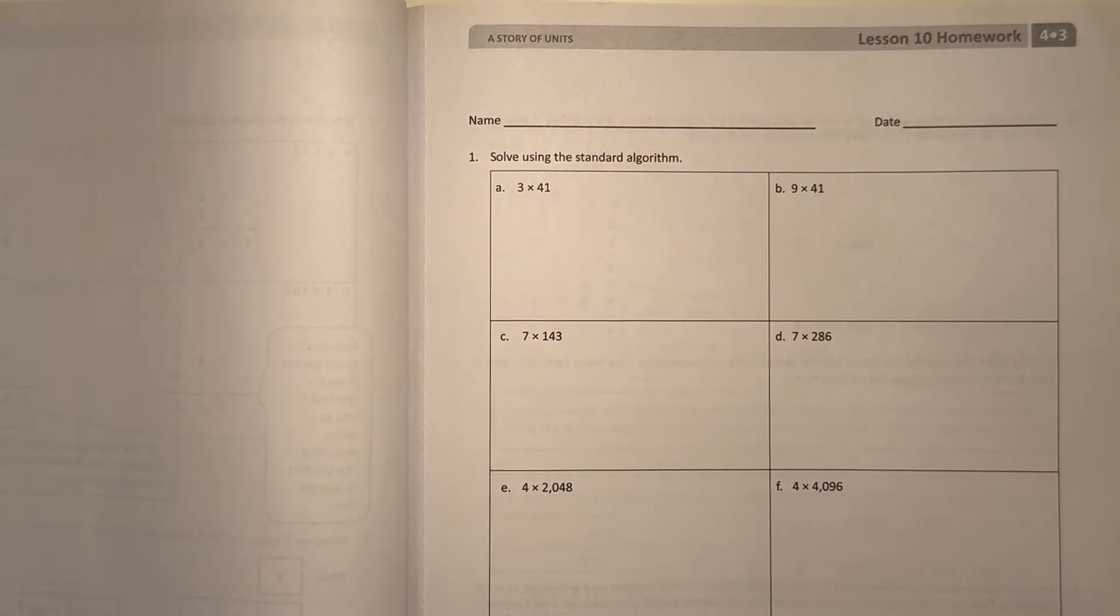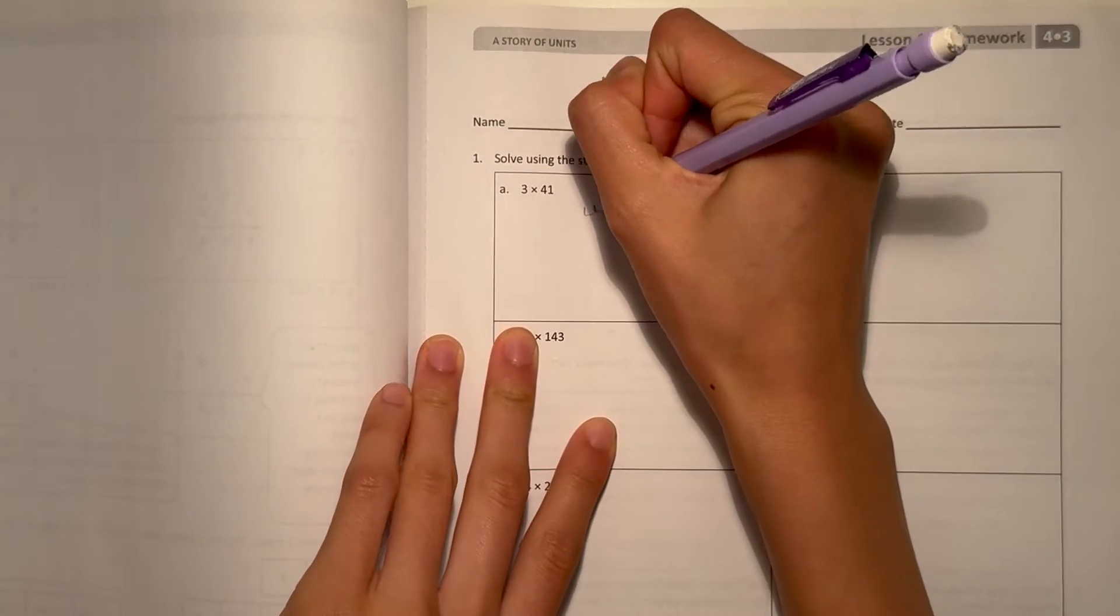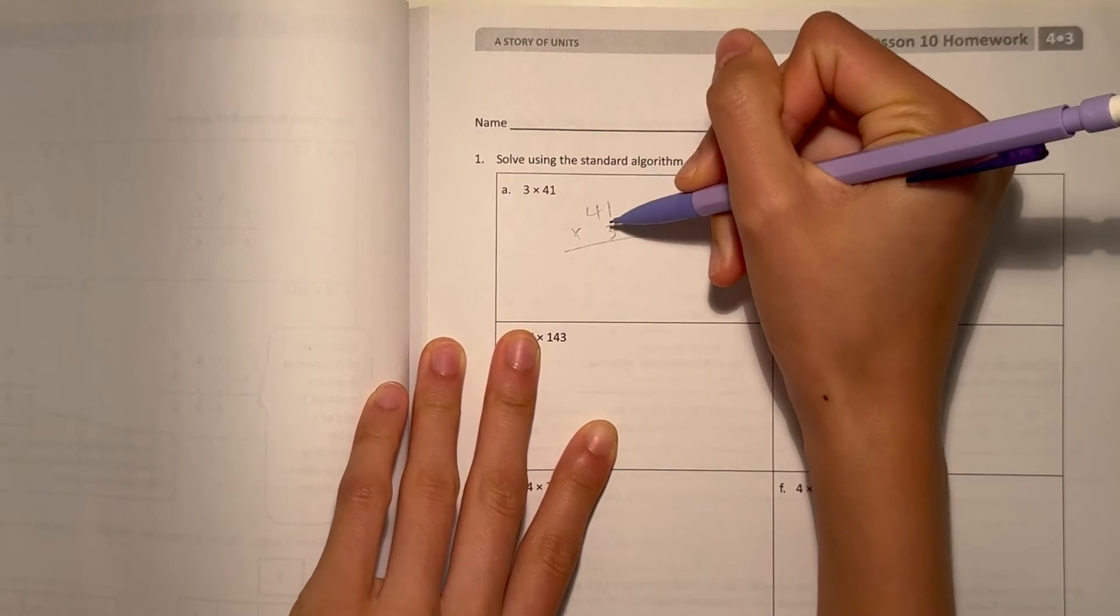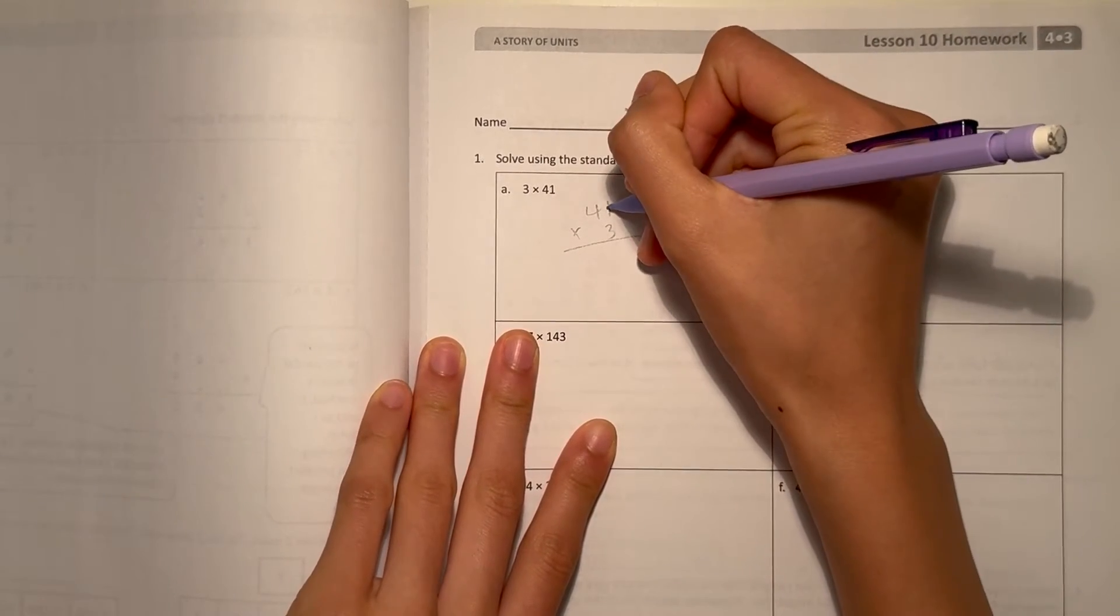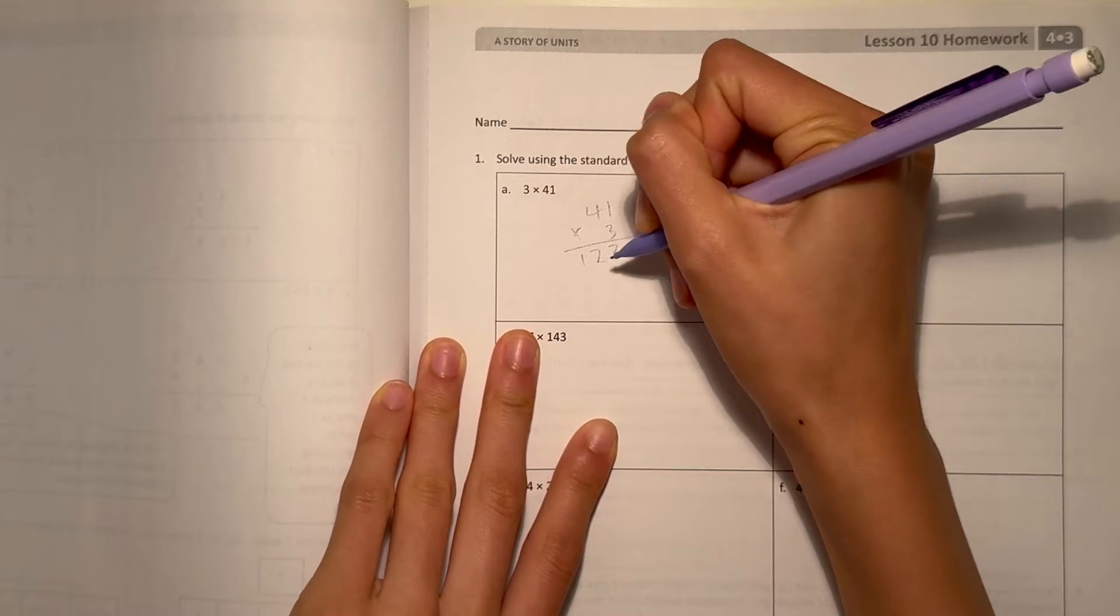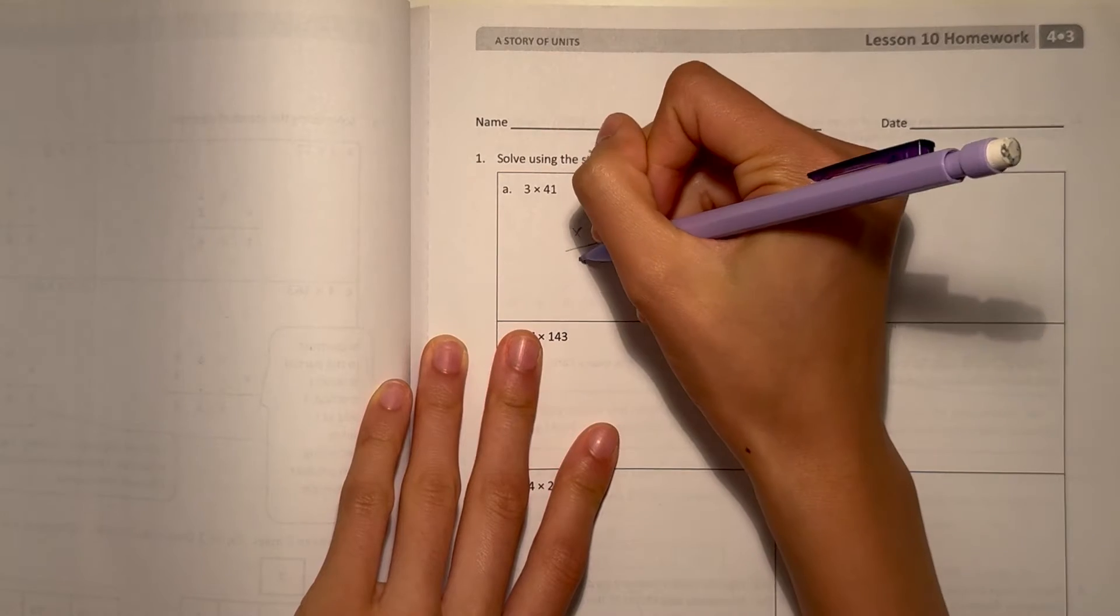A, we have 3 times 41. We can rewrite it as 41 times 3. So let's look at the 3 here. 1 times 3 is 3, and 4 times 3 is 12. So simple as that, our answer is 123.